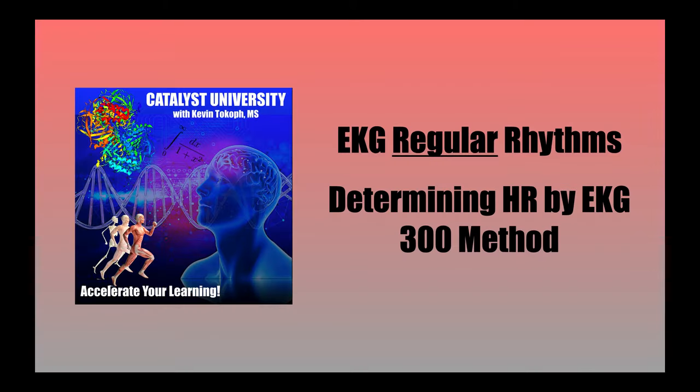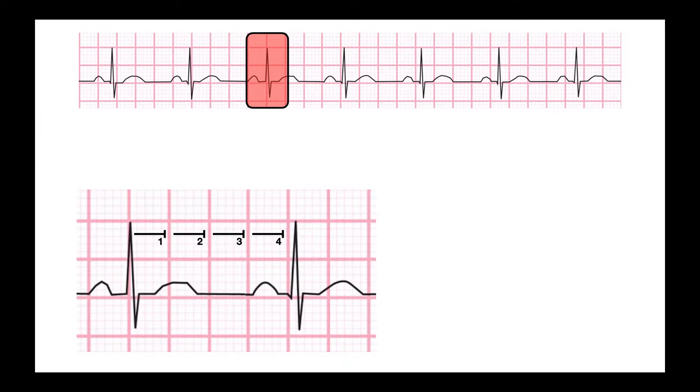The other method we can use on regular rhythms is the 300 method. This is a method that does not require a calculator. It's less accurate and it seems to be the method preferred by a lot of instructors. So let's go over how to do this. First I determine if this EKG pattern is regular or irregular. This is the same pattern from before so it is regular. Then we need to determine which peak is best to use. Again we're going to look at the peak that's right on this solid line.